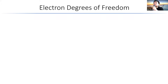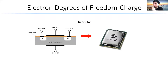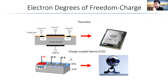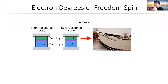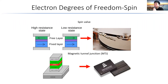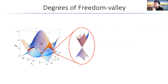First, I'm going to start with talking about electron degrees of freedom. We know it has charge, with which we made transistors—that is really important in the CPU nowadays. The second one is charge-coupled device, which is used for imaging. We also know there's a degree of freedom called spin, and we can make a spin valve that is used for hard disk drive storage.